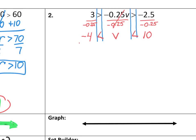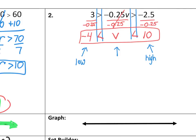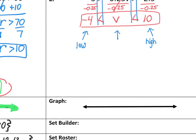This is already in set builder notation because the low number, negative 4, is on the left, the variable V is in the middle, and the high number, 10, is on the right. To graph it, negative 4 is the smaller number on the left, 10 is the higher number on the right. Both are just less than — not less than or equal to — so neither is included. I use open circles on both, and since it's an AND situation, I shade in between. All numbers between negative 4 and 10 are in the solution set.